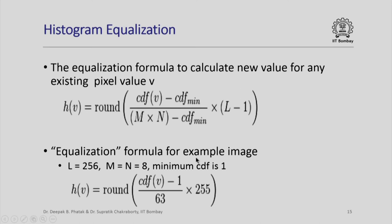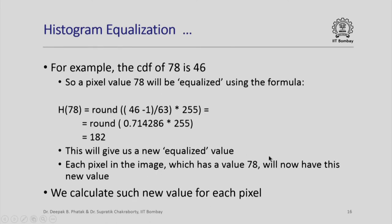The equalization formula for our example image, where L is 256, M and N are 8, and the minimum CDF is 1, is simply: H(V) = round((CDF(V) − 1) / 63 × 255). That means for every value V we can find out what the new value H will be. For example, the CDF of 78 is 46. So a pixel value 78 will be equalized — it will be mapped to a new value. The formula gives H(78) = round((46 − 1) / 63 × 255) = round(0.714286 × 255) = 182.